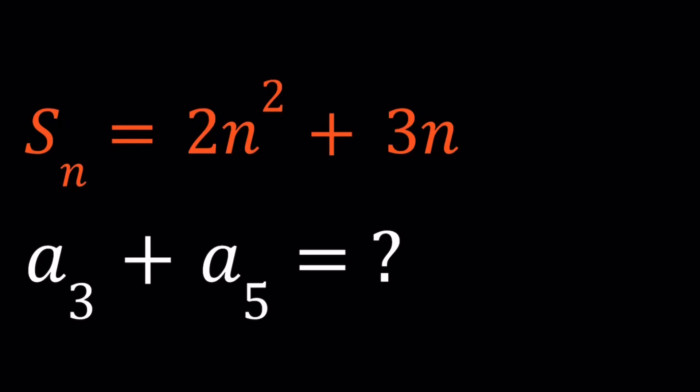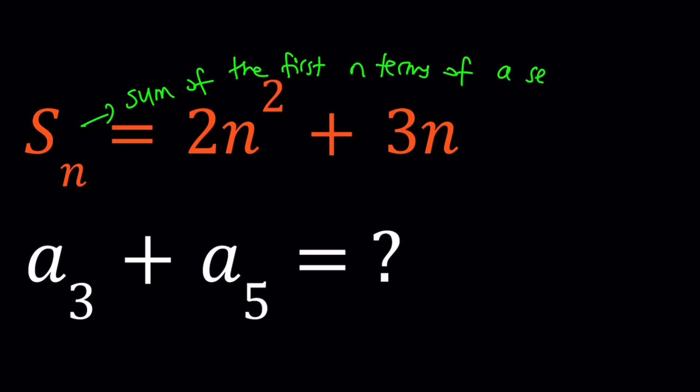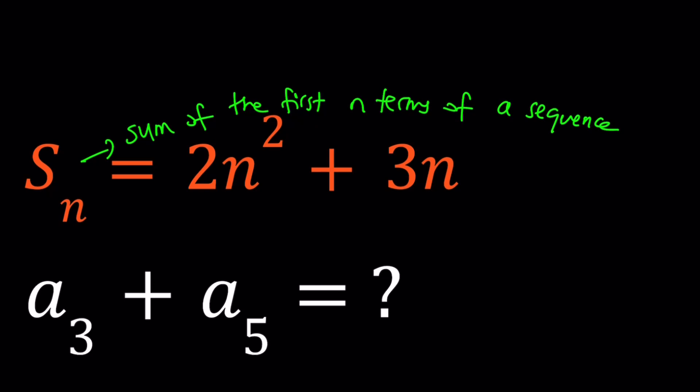Hello everyone. In this video we're going to be solving a problem with series and sequences. We have S sub n, which means the sum of the first n terms of a sequence. S sub n is given in terms of n, and we're supposed to find the third term plus the fifth term of this sequence.